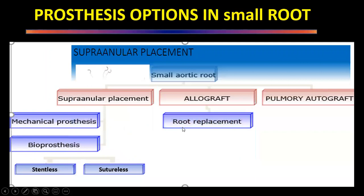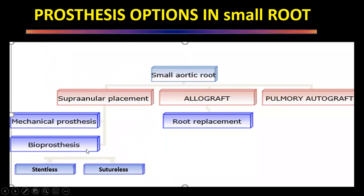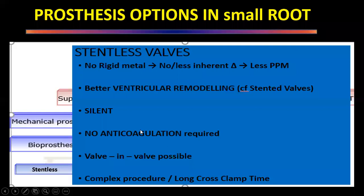There are also options for bioprostheses, though it sounds contradictory because bioprostheses inherently have higher gradients. However, stentless valves and sutureless valves can be very handy in patients with a small aortic root. Stentless valves are bioprosthetic valves without a rigid metal stent, so there is no inherent gradient. Whatever size is implanted will give less gradient across the aortic annulus, reducing chances of patient-prosthesis mismatch post-operatively. They have been shown to cause better ventricular remodeling compared with stented valves. Benefits include: they are silent, they do not require anticoagulation.